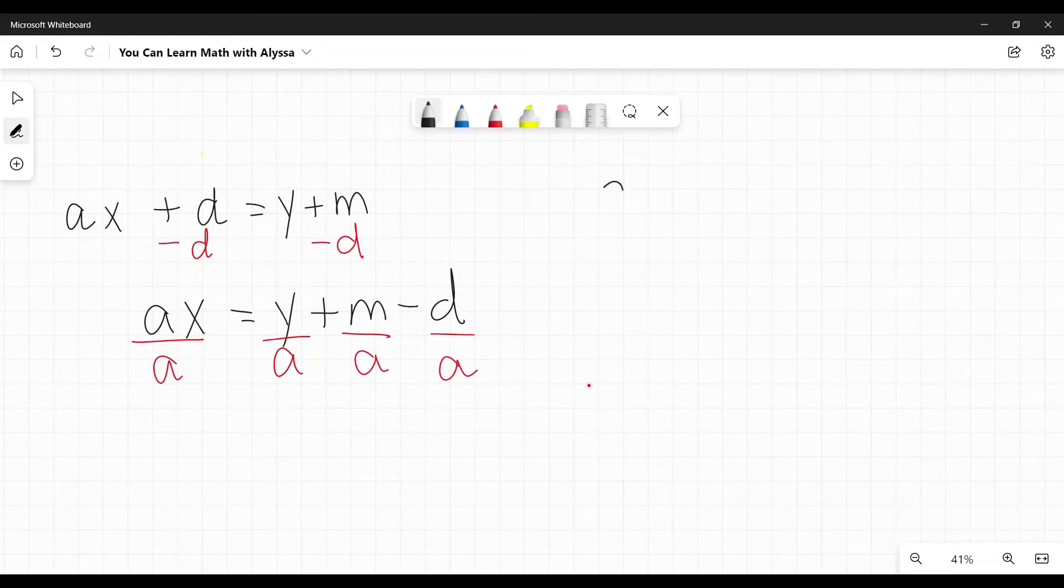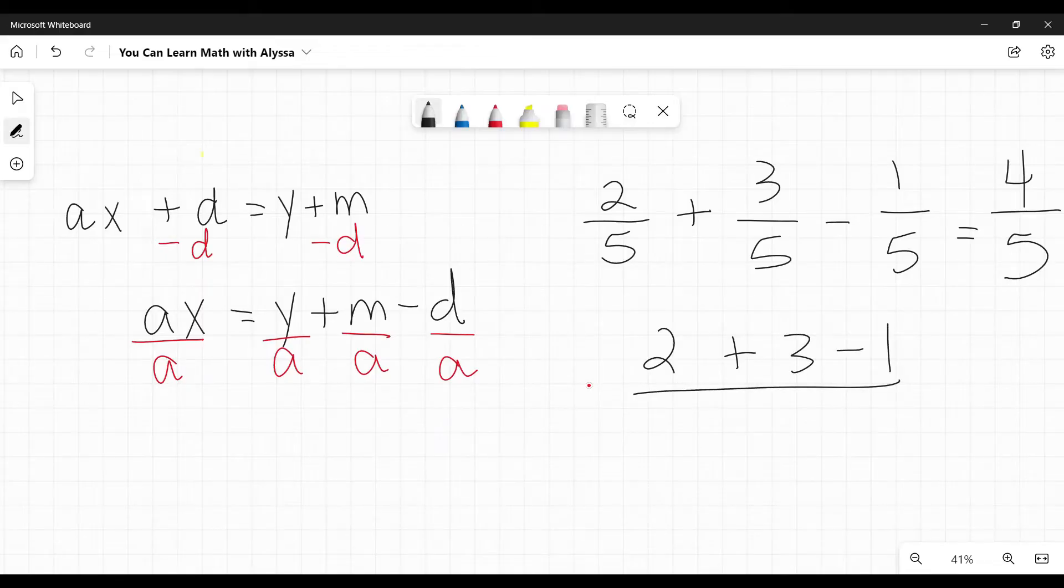As a little side note, the reason it means the same thing, if you put some real numbers in there, it'll help you see it. Like, let's say I said two fifths plus three fifths minus one fifth. And you would say, okay, two fifths plus three fifths is five fifths minus one fifth is four fifths. Isn't that the same as saying two plus three minus one over five? Two plus three is five minus one is four over five. It's the same thing. It works the same.